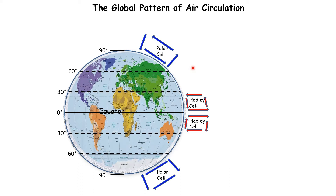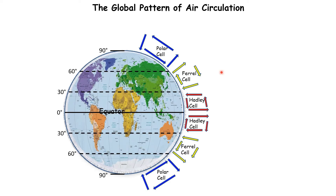This updraft — the rising air at 60 degrees — drags up the air next to it. And the downward movement of air in the Hadley cells at 30 degrees south and 30 degrees north drags air down with it. Together, we can complete these two cells, which are called the Ferrel cells.